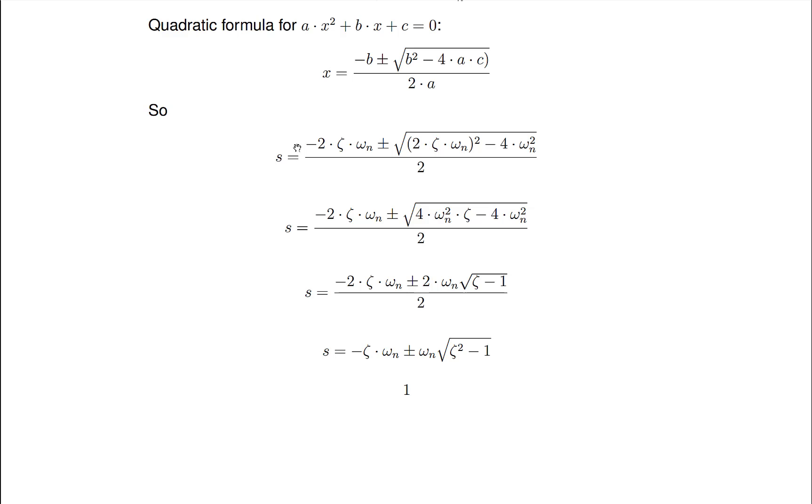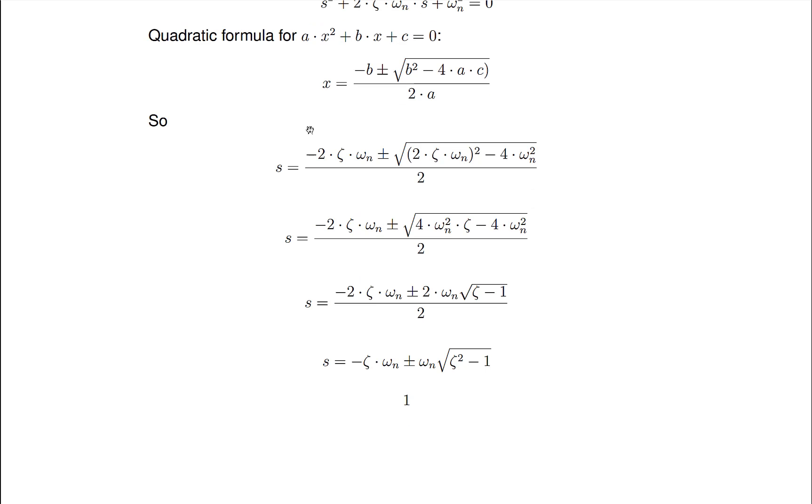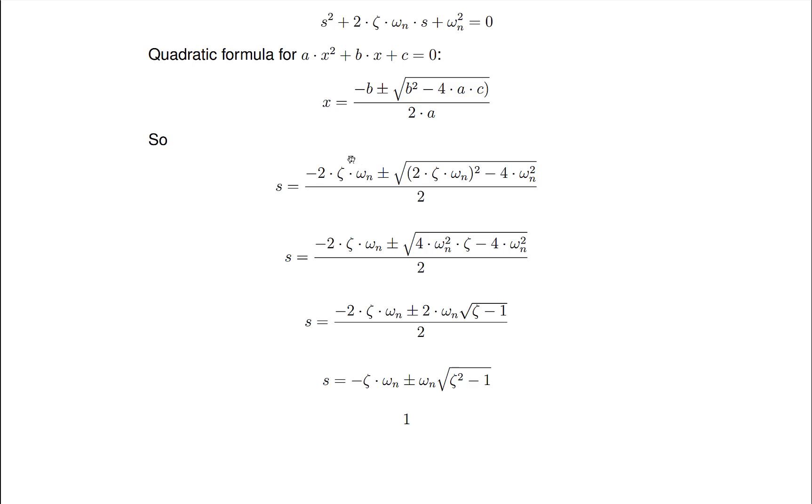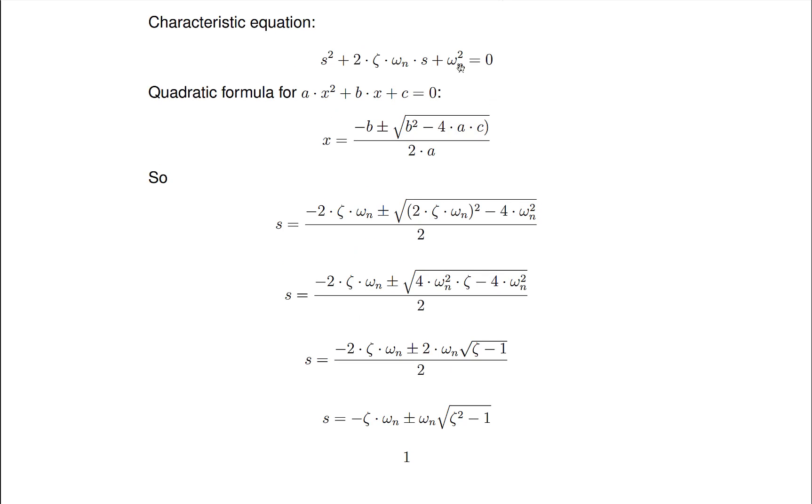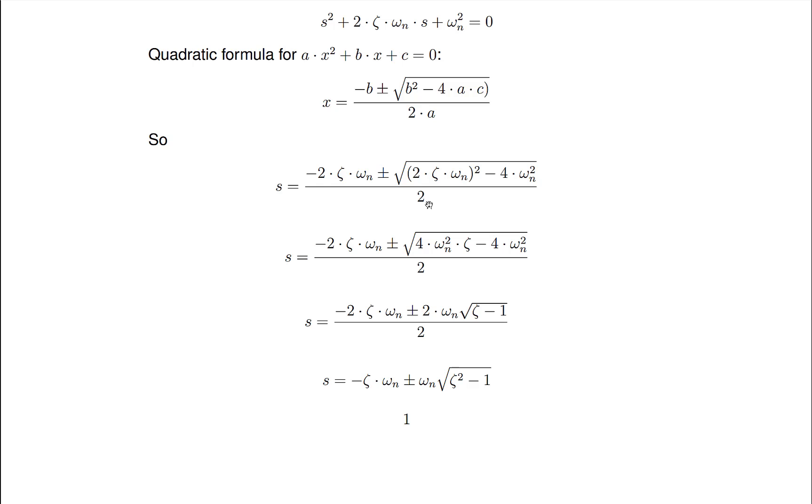So if we plug in our values from above, this is our b which was the coefficient of the s term and then this is b squared plus 4ac. A is 1 so 4 times c, and c above as you can see here is omega n squared over 2a. A is 1 again.